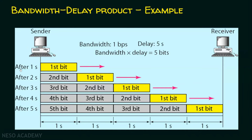Let's see it formally. After one second, one bit will be there because the bandwidth is one bit per second — after one second, only one bit will be placed on the link. After two seconds, the second bit will be placed, giving two bits. After three seconds, there will be three bits. Since the length is five seconds, after four seconds the fourth bit is placed, and after five seconds the fifth bit is placed. Since the delay is five seconds, there are five bits total on the link. So the bandwidth delay product is five bits — the capacity of the link is five bits.